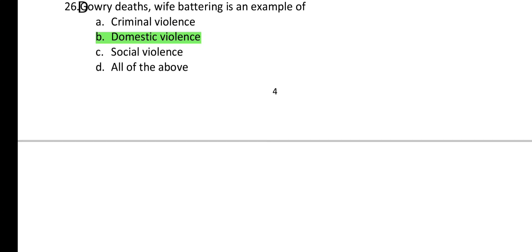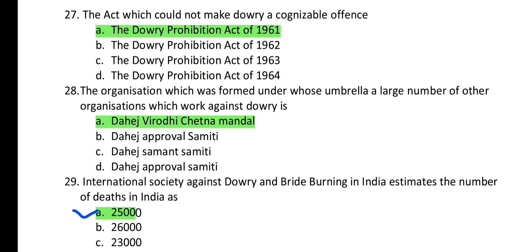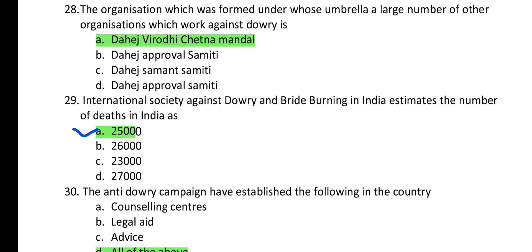Very few questions are left — have patience. Question 27: Which act could not make dowry a cognizable offense? The Dowry Prohibition Act of 1961 could not make dowry a cognizable offense. Question 28: The organization formed as an umbrella under which a large number of organizations work against dowry is Dahesh Virodi Chetna Mandal.